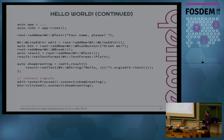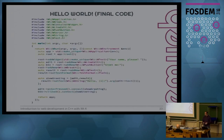Then we connect the signals: connect the enterPressed signal of the line edit to the showGreeting function, and connect the clicked signal of the button to the showGreeting function too. That's the final code.